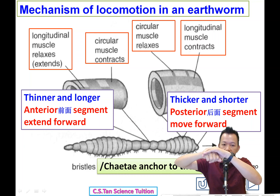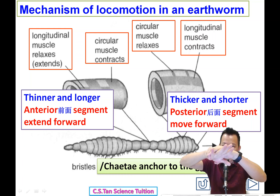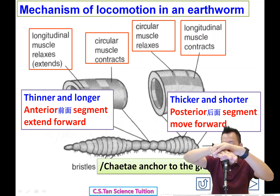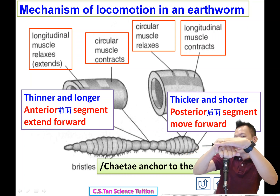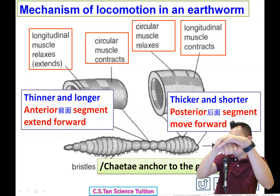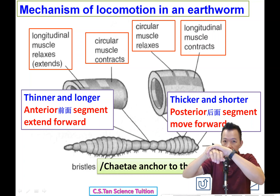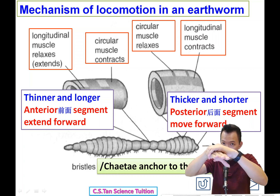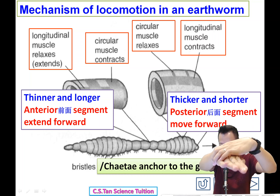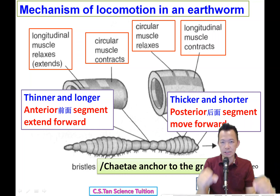To summarize the cycle: circular muscle contracts, longitudinal muscle relaxes — the earthworm becomes thinner and longer. The setae anchor to the ground. Then circular muscle relaxes, longitudinal muscle contracts — the body becomes shorter and fatter, and the posterior segment is pulled forward.